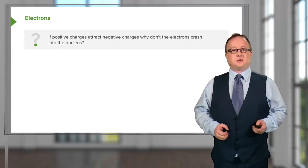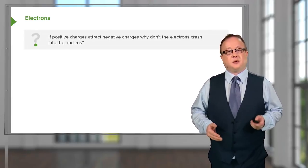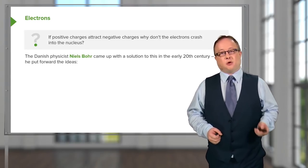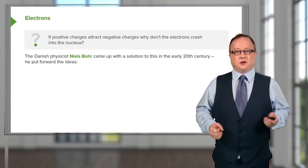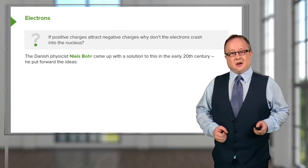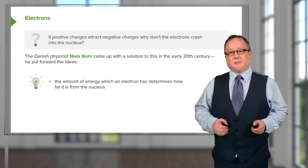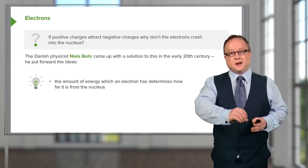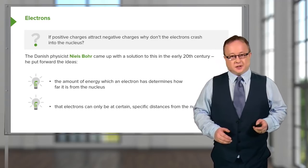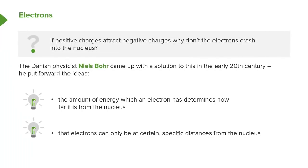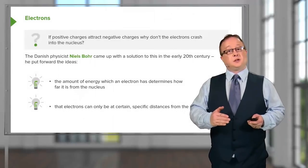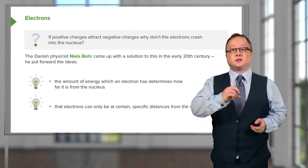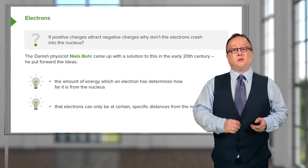This is the basis of quantum mechanics — the understanding that energy exists in small discrete packets. It was the Danish physicist Niels Bohr who came up with a solution to this issue of electrons not crashing into the nucleus in the early 20th century. He put forward that the amount of energy which an electron has determines how far away it is from the nucleus — the more energy it has, the further away it is from the grasp of the positive charge. He also suggested that electrons could only be at certain specific distances from the nucleus, meaning that quantized energy means electrons could only exist at certain discrete distances from the nucleus of an atom.